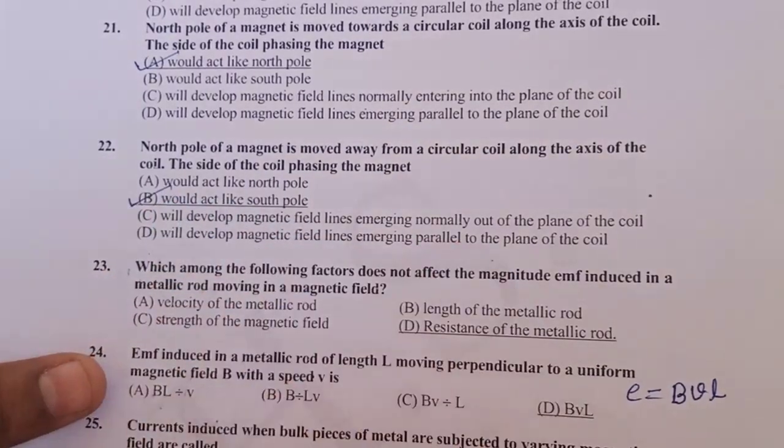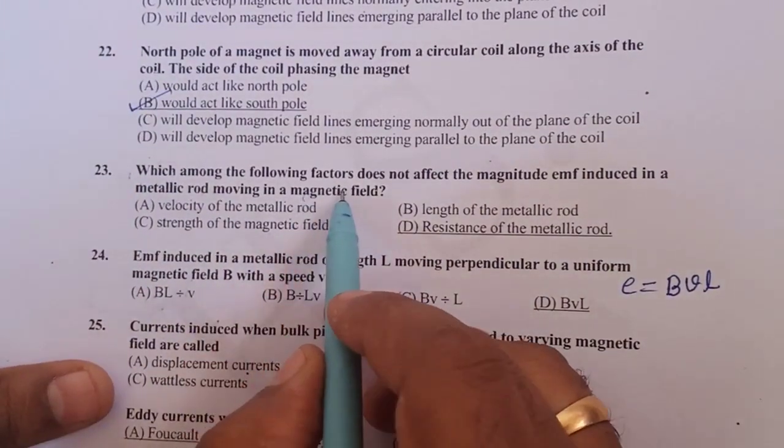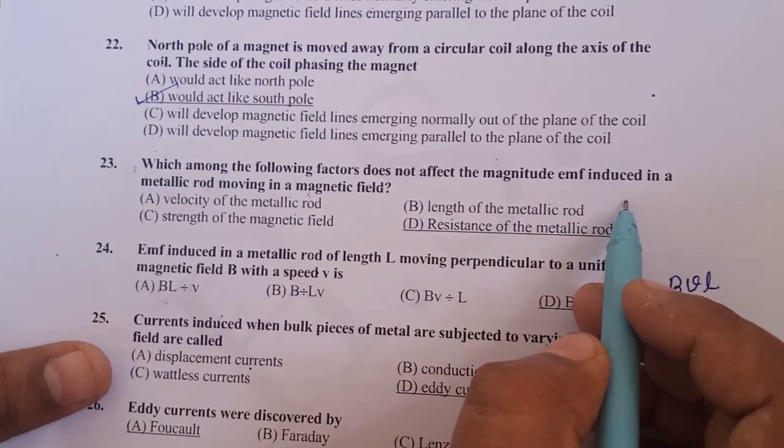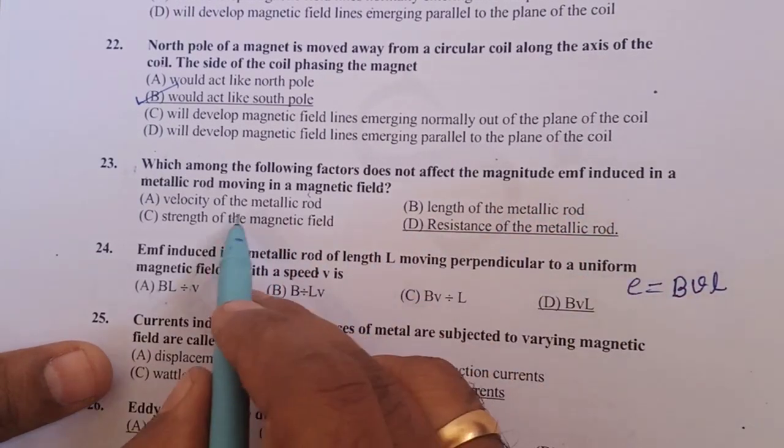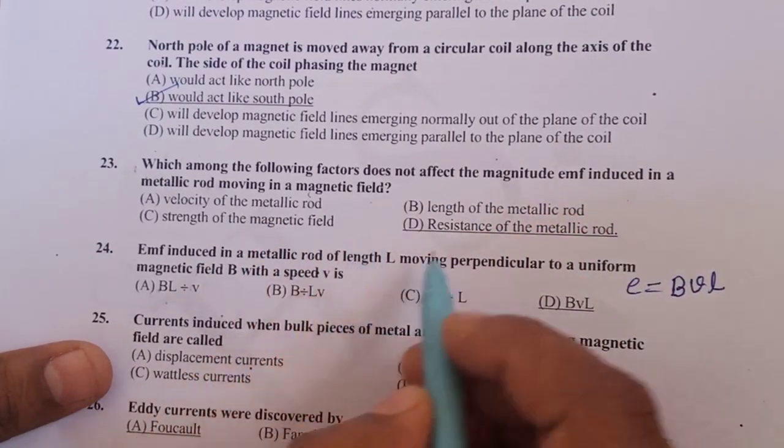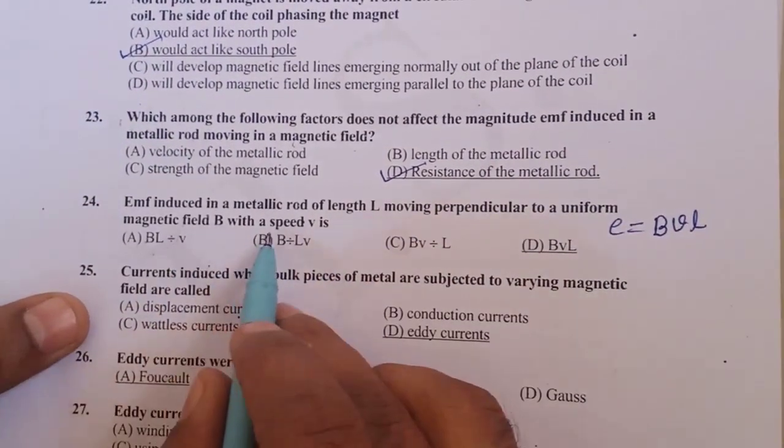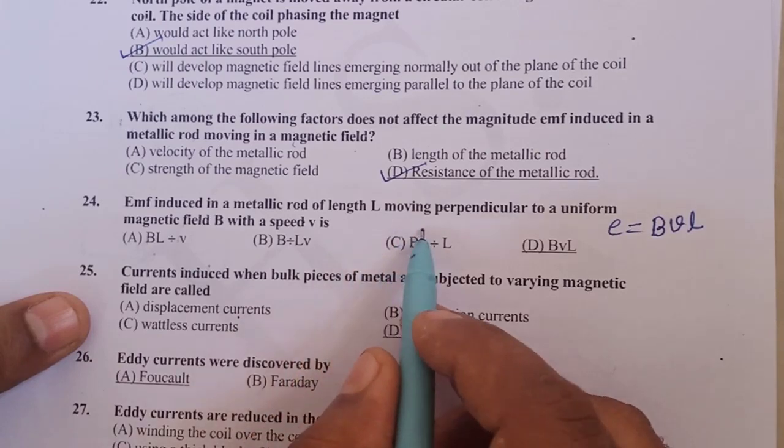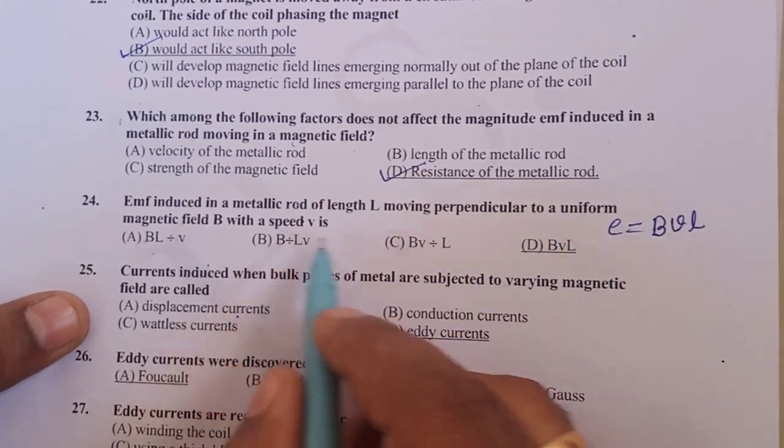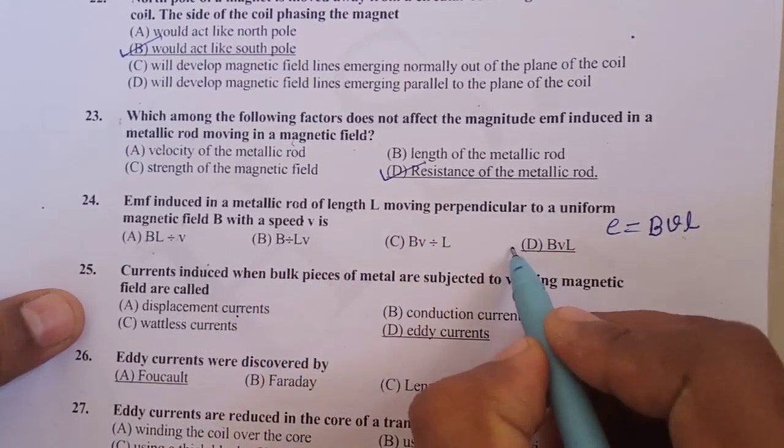Which of the following factors does not affect the magnitude of EMF induced in a metallic rod moving in a magnetic field? It is the resistance of the metallic conductor. EMF induced in a metallic wire of length L moving perpendicular to uniform field is given by E is equal to BLV. Therefore option D is correct.